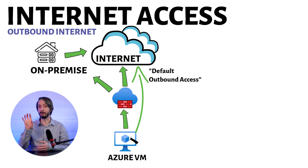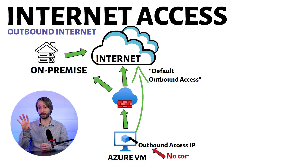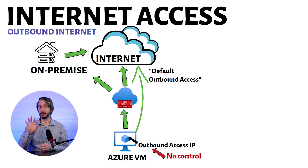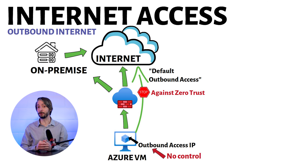Virtual machines created in a virtual network without any extra setup for internet connectivity will use something called the default outbound access in Azure. In practice, this means the virtual machines will be assigned an outbound IP address from Azure. You do not have any control over this IP address, which also may change during the life cycle of the VM.